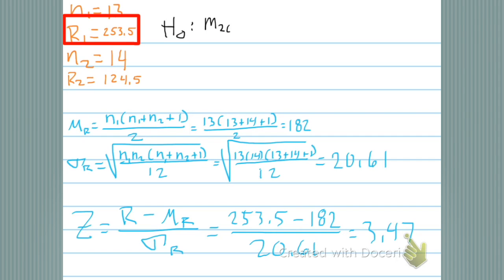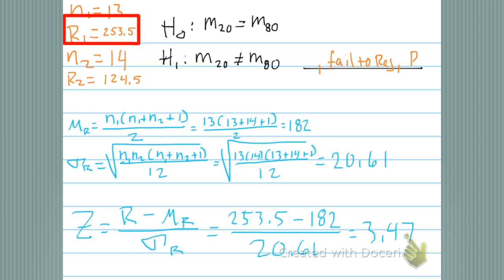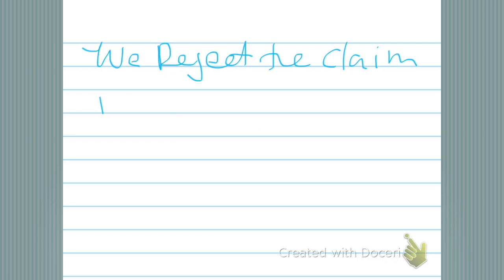But what's our claim? Our claim is that the medians are the same; our alternative is that they're different — that means you've got a two-tailed test, with fail-to-reject in the center and reject on the outside. At alpha equals 0.05, our critical values are plus and minus 1.96. Our test statistic of 3.47 falls way over there in the rejection region. So the claim is rejected — the medians are not the same.